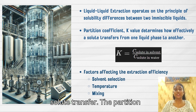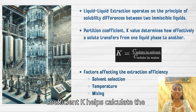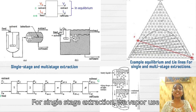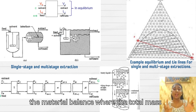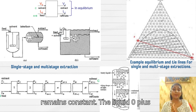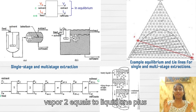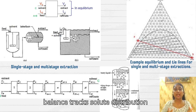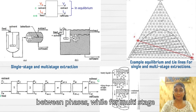The partition coefficient K helps calculate the distribution of solute between phases. For single-stage extraction, we use the material balance where total mass remains constant: L₀ + V₂ = L₁ + V₁. The solute balance tracks solute distribution within phases.